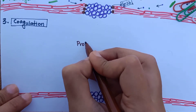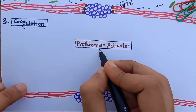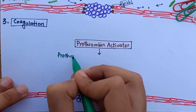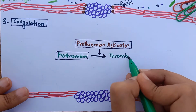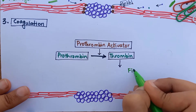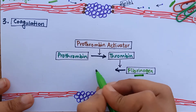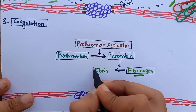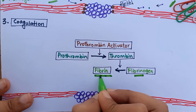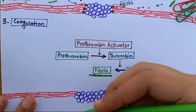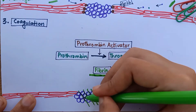In each instance, this leads to the formation of prothrombin activator. Prothrombin activator catalyzes the conversion of prothrombin into thrombin. Thrombin acts on fibrinogen, causing polymerization of its molecules into fibrin fibers. Fibrin fibers form a meshwork running in all directions, entrapping blood cells and platelets, and this makes the final blood clot.